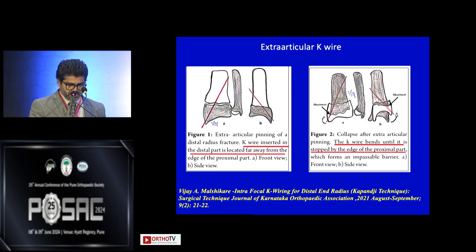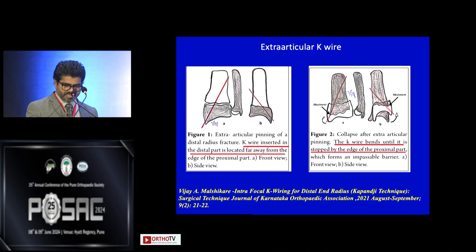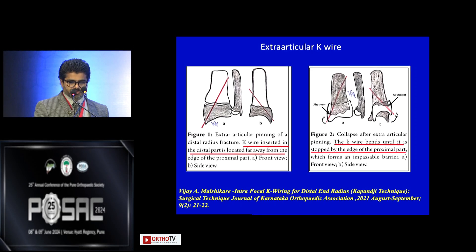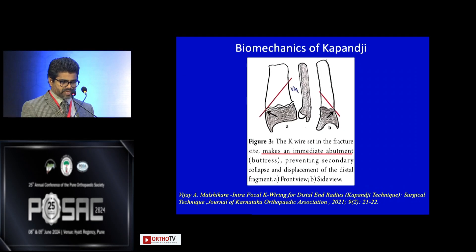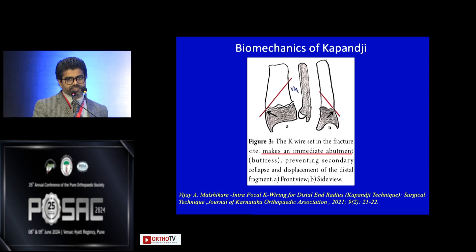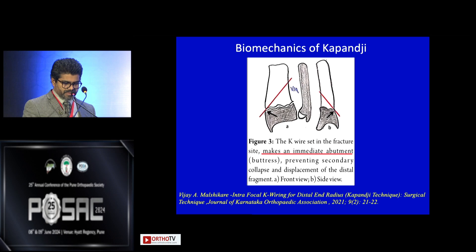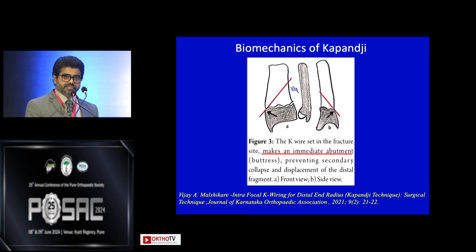In the modified Kapanji technique, the K-wire is inserted in the distal part, located far away from the edge of the proximal part. When the fracture gets the K-wire, it tends to bend until it stops at the edge of the proximal part where there is a collapse. The biomechanics of Kapanji involve passing a K-wire between the fracture ends; 2 mm makes immediate abutment and prevents secondary collapse or displacement of the distal fragment.